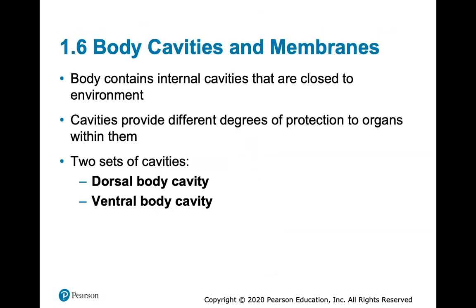Body cavities and membranes: your internal organs are not just floating around in the same place — there are specific cavities that contain specific organs. These internal cavities are closed to the environment and provide different degrees of protection to the organs within them. There are two main sets of cavities in the body, the dorsal and the ventral cavity — by now you'll know that means posterior and anterior.